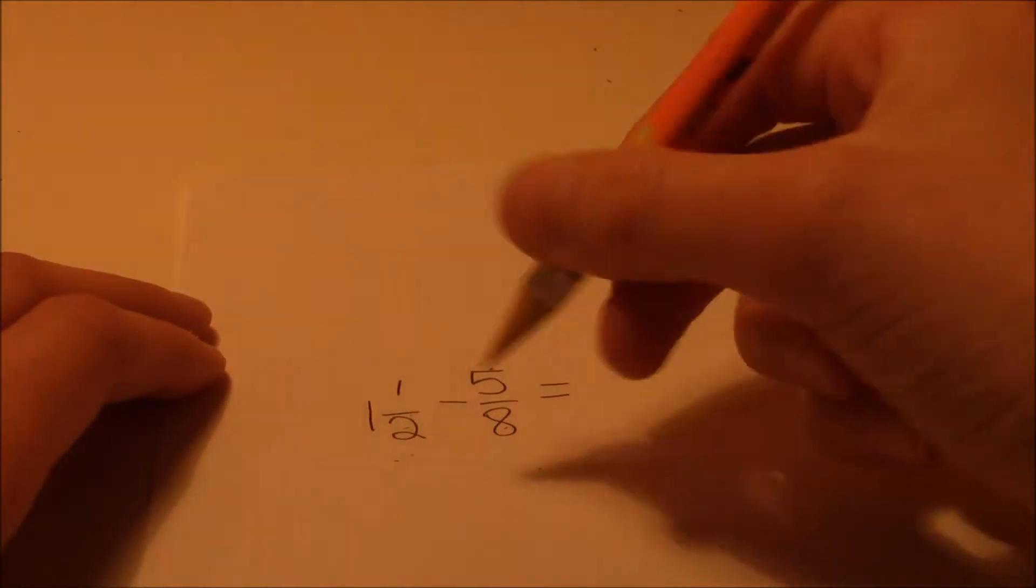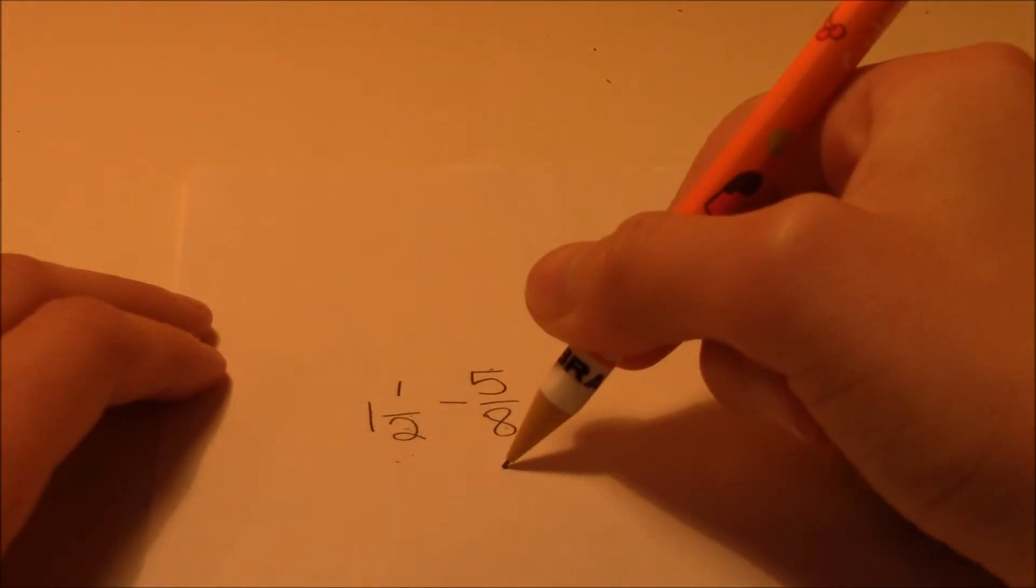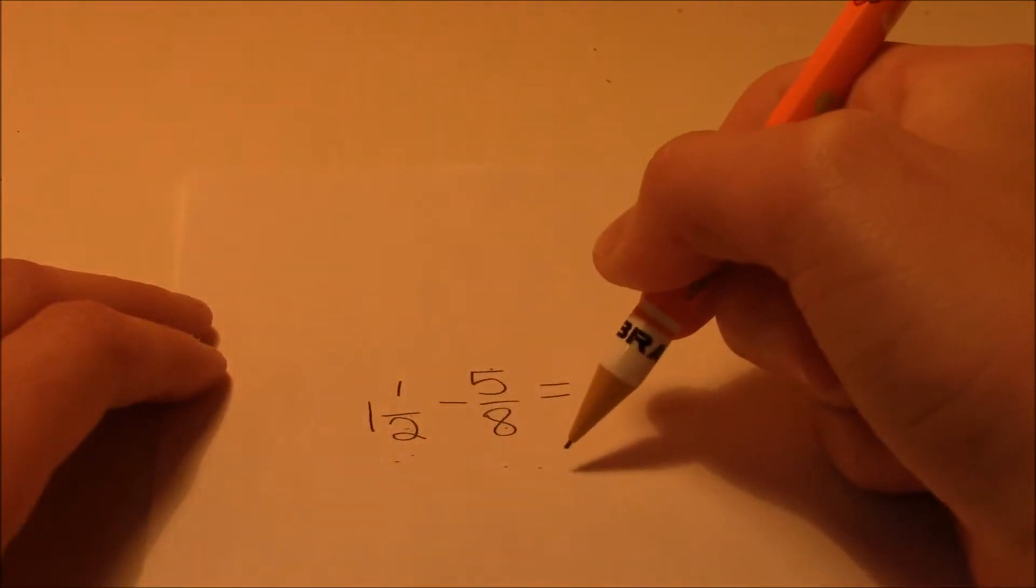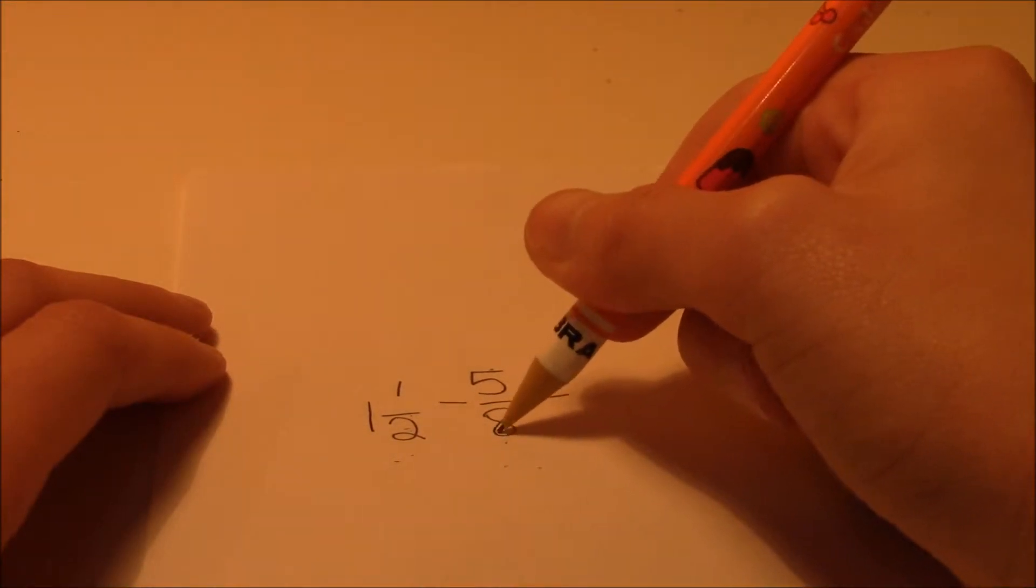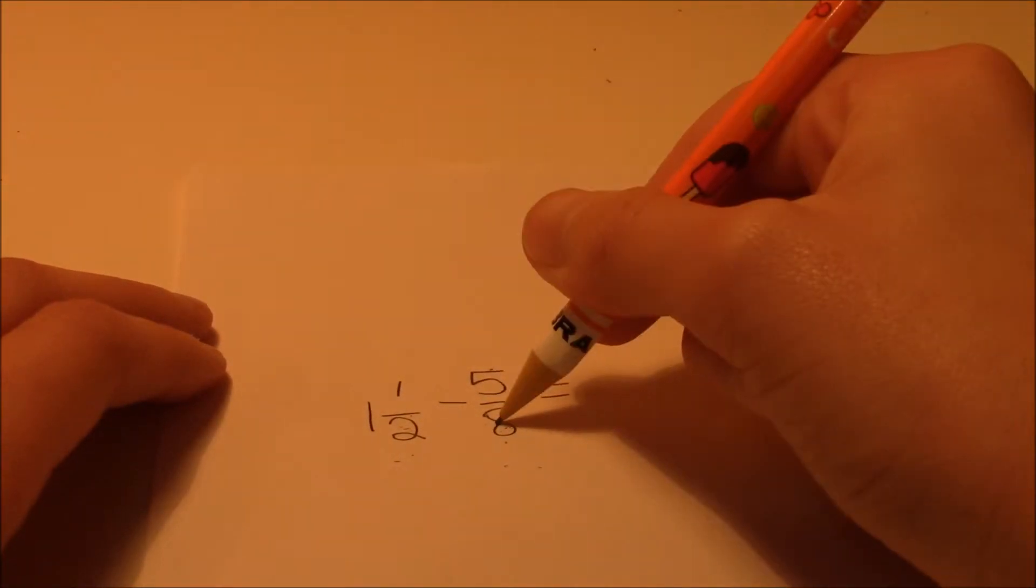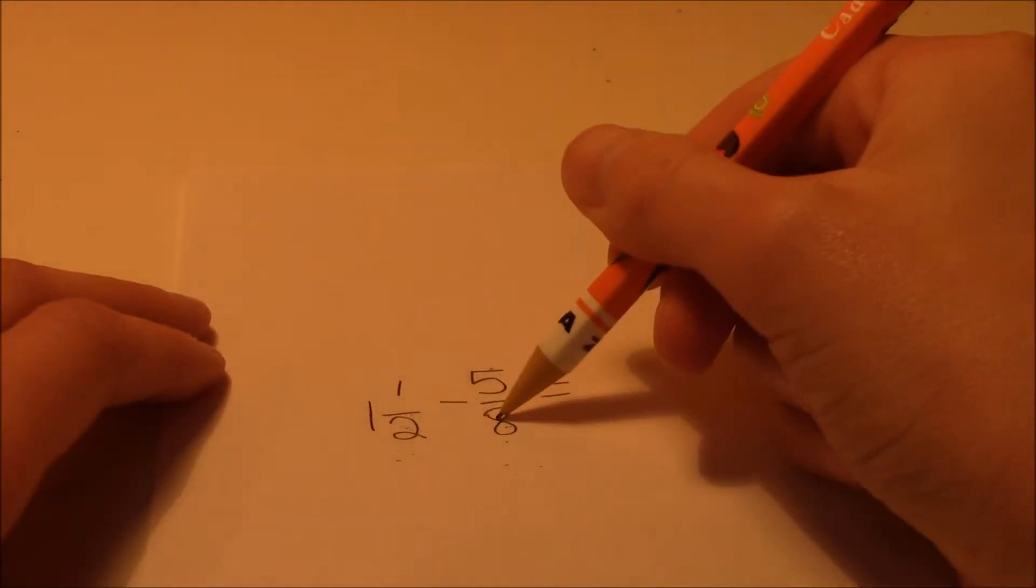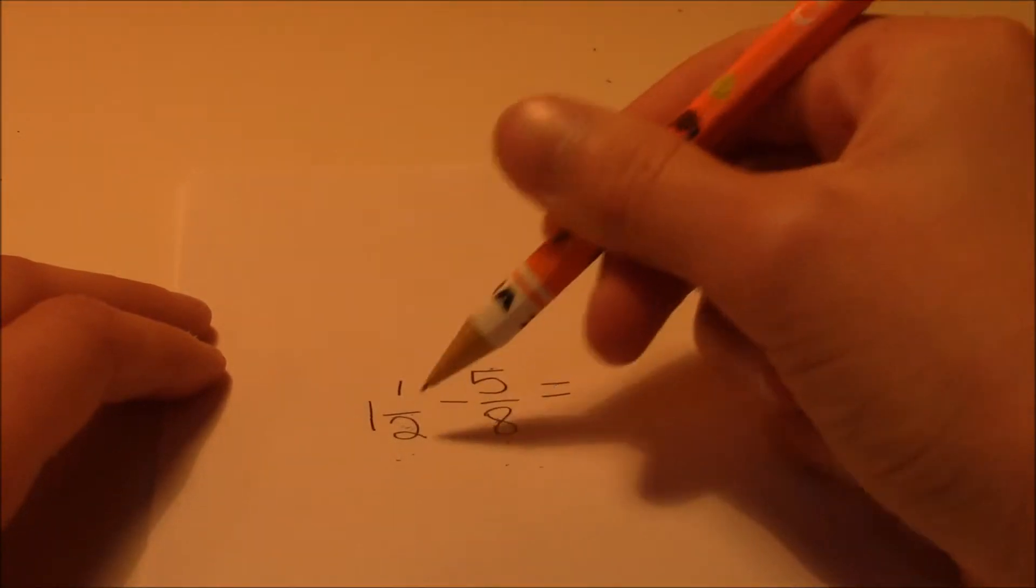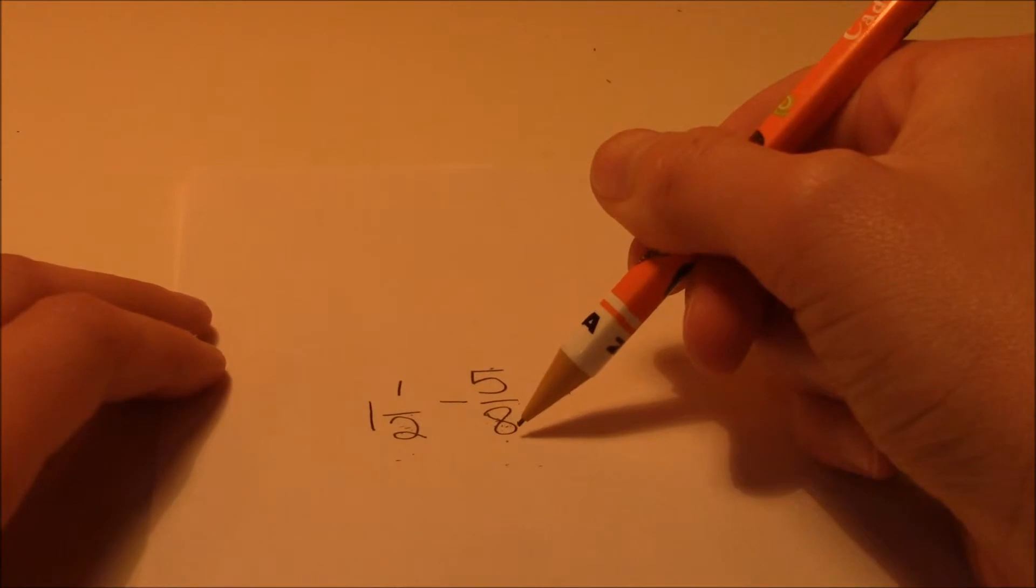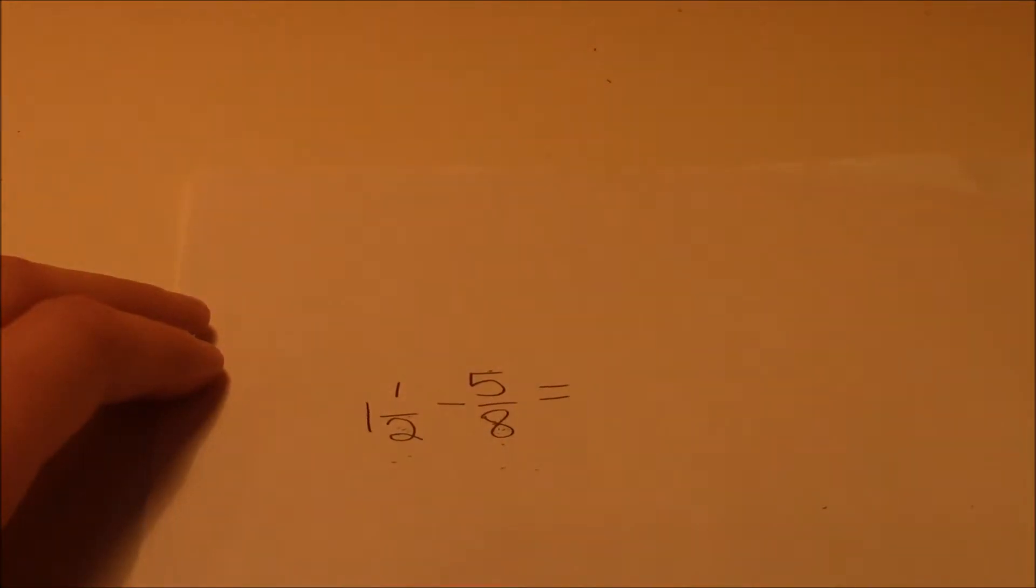because 2 goes into 8, as well as 8 is the lowest number that this can go in. This is a bit confusing. So 8 can go into itself one time. 2 goes into 8 four times, therefore 8 is the lowest common denominator.